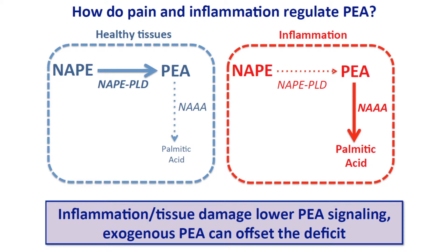The enzyme that makes PEA, NAPLD, goes down—the transcription is downregulated. And the expression of the enzyme that destroys PEA, making palmitic acid, is increased. So it's a double whammy: less production, more degradation, less PEA.